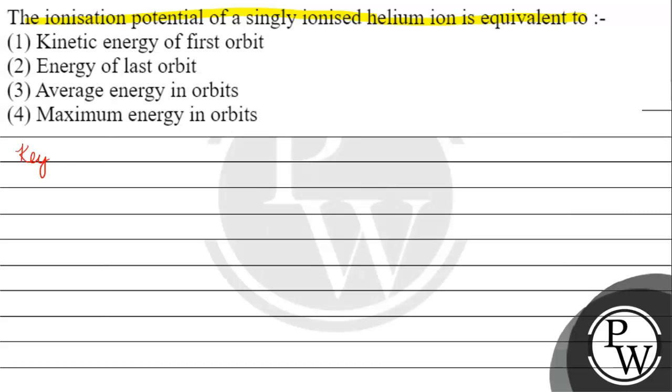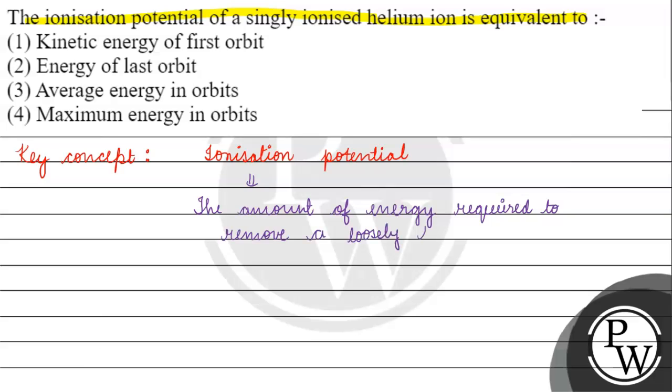The key concept for this question is ionization potential. Ionization potential is basically the amount of energy required to remove an electron from the outermost orbit of an isolated gaseous atom.